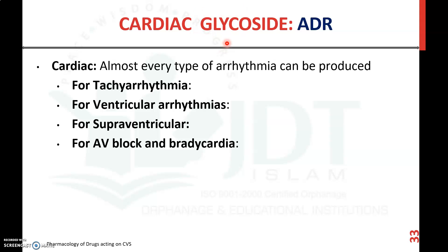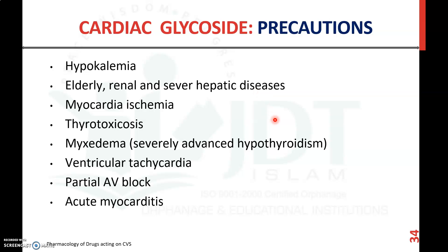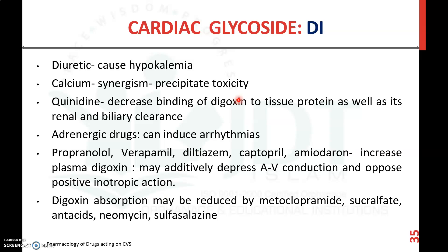Precautions when using cardiac glycosides: there is a risk of hypokalemia, so they should not be used in patients who have hypokalemia. They should not be used in elderly patients, renal impairment, severe hepatic disease, cardiac ischemia, thyrotoxicosis, or myxedema — both thyroid disorders present opposing conditions. They should be used with precaution in ventricular tachycardia, partial AV block, and acute myocarditis.